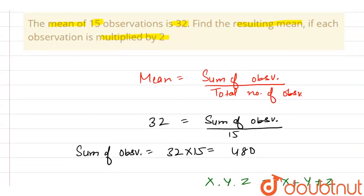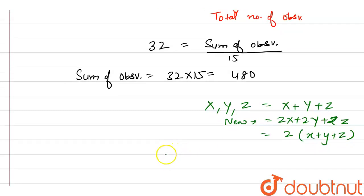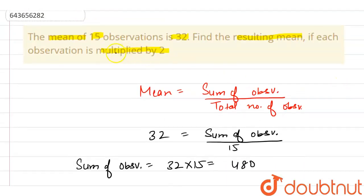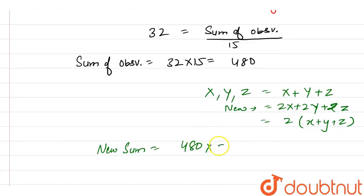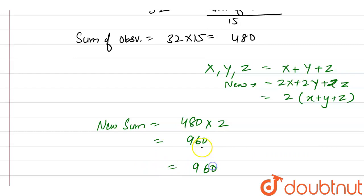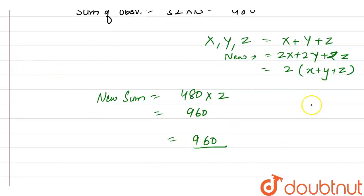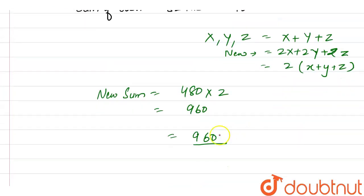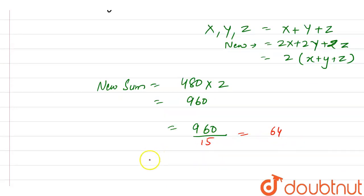As the question says each observation is multiplied by 2, the new sum will equal the old sum multiplied by 2, that is 480 into 2, which equals 960. Now the new mean equals the new sum of observations, 960, divided by the total number of observations, 15. Solving this gives us 64. Hence the new mean is 64, and this is our final answer.